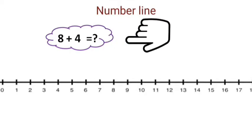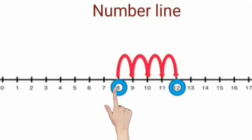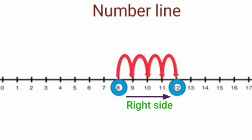To find the sum, 8 plus 4 is equal to — what is the answer? First we start at 8, jump to 4, move on the right side.